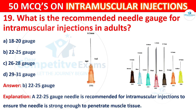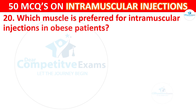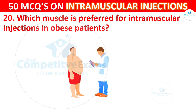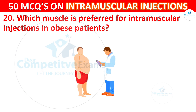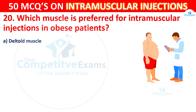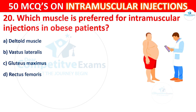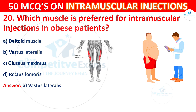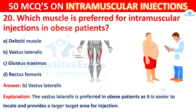Question 20: Which muscle is preferred for intramuscular injection in obese patients? The correct answer is B, vastus lateralis. The vastus lateralis is preferred in obese patients as it is easier to locate and provides a larger target area for injection.